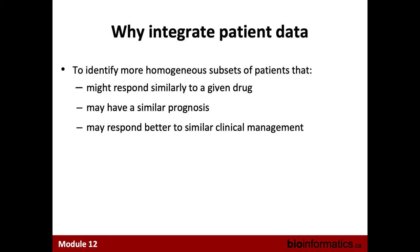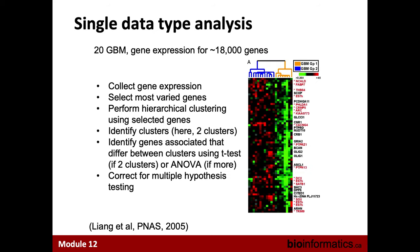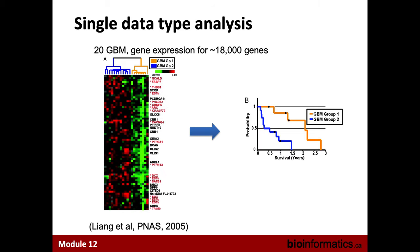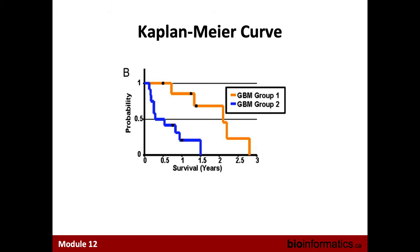An example of a single data type analysis is this GBM study by Liang et al. in 2005 in PNAS. They collected gene expression data, selected the most variable genes, and performed hierarchical clustering on them. They identified two clusters and genes that are really dividing these patient groups. They then looked at the survival patterns and found that the two groups actually have really different survival patterns. How many of you are familiar with survival Kaplan-Meier curves?